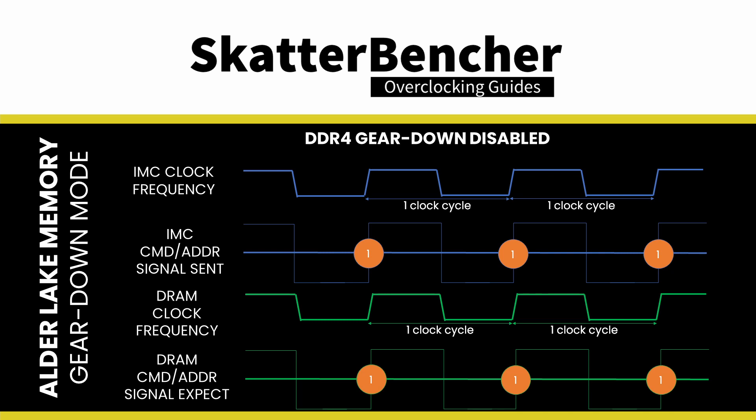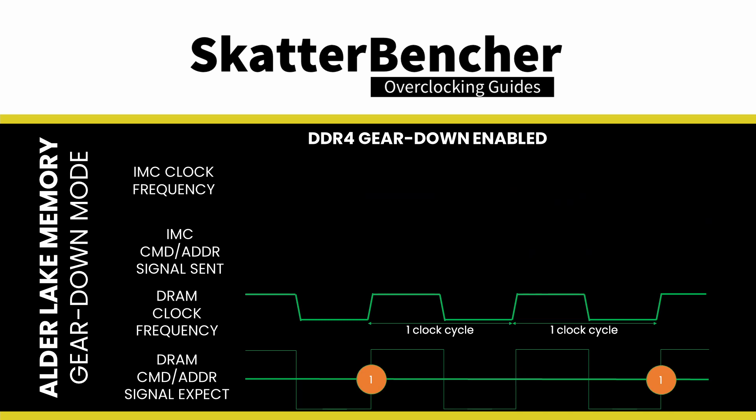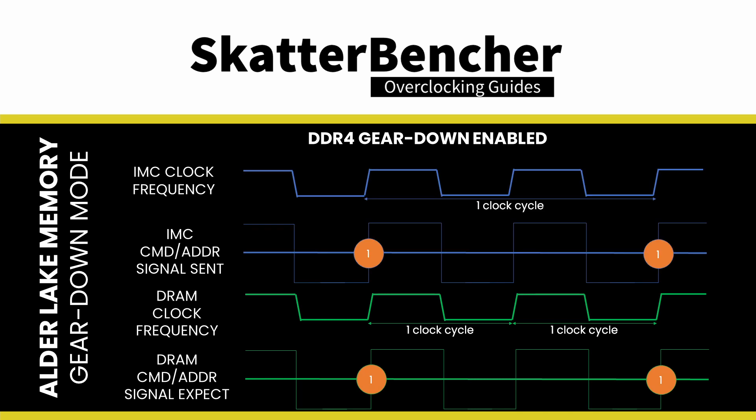When Gear Down mode is enabled, that's not the case. In Gear Down mode, the memory expects a command address signal every other clock cycle. A convenient or even necessary consequence of using the command address bus every other clock cycle is that you can run the memory controller at half the frequency and still achieve the same performance.